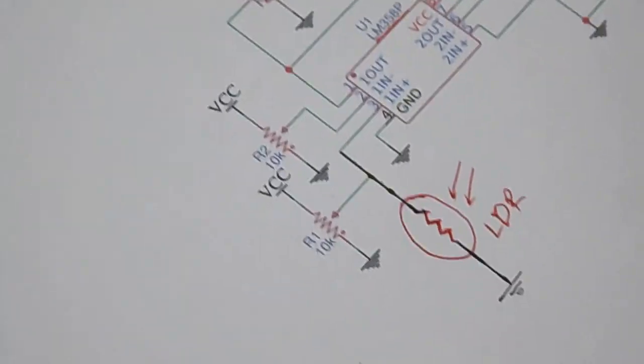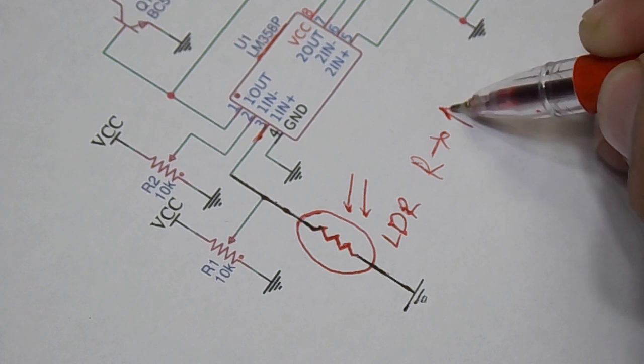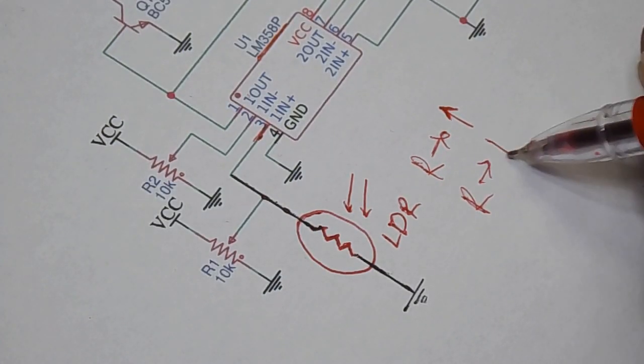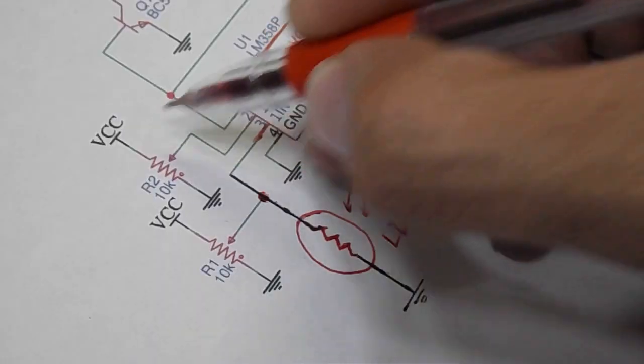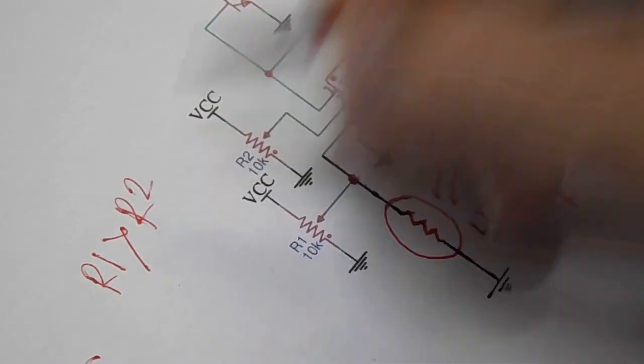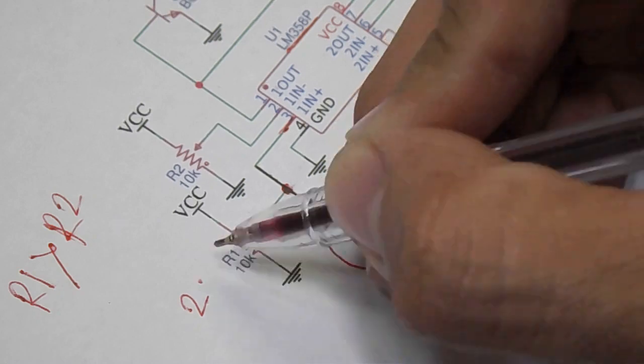As pin number 3 is non-inverting terminal, the LDR is connected to it whose resistance increases in darkness and decreases in brightness. The R1 and R2 are the two potentiometers to vary the voltage. The voltage of R1 must be greater than R2, otherwise the LED strip won't glow. Suppose the voltage of R1 is 2.8 volt and 2.6 for the R2.